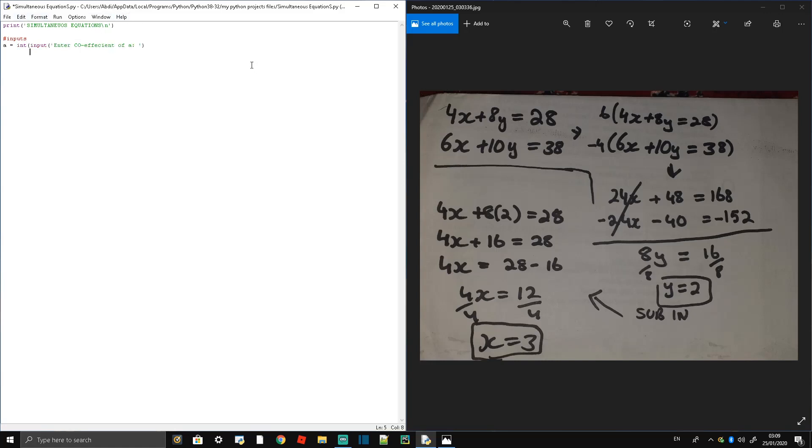Since we're not entering letters into the thing, we're only going to be using the coefficients of x and y: 4 and 8. So a is going to be equal to 4, b is equal to 8, and c is equal to 28.